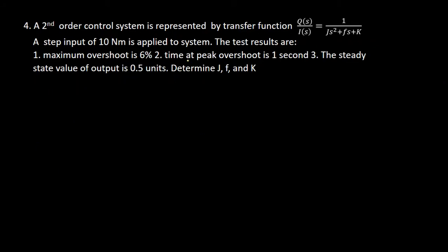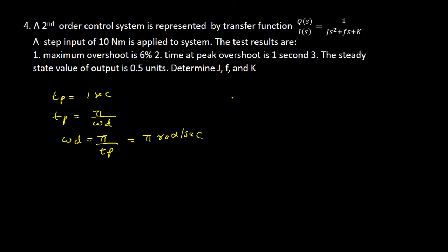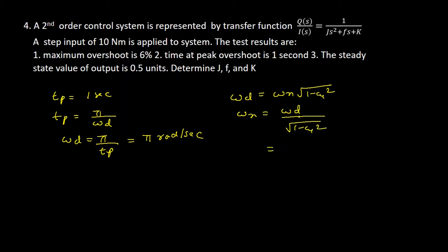It is given that the peak time tp = 1 second. We know tp = π/ωd, so ωd = π/tp = π rad/s. Since ωd = ωn · √(1−ζ²), we get ωn = ωd / √(1−ζ²) = π / √(1 − 0.667²). Solving this gives ωn = 4.2166 rad/s.